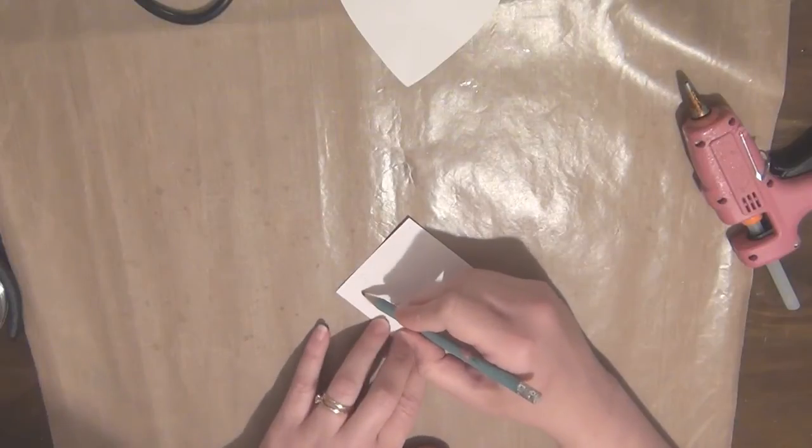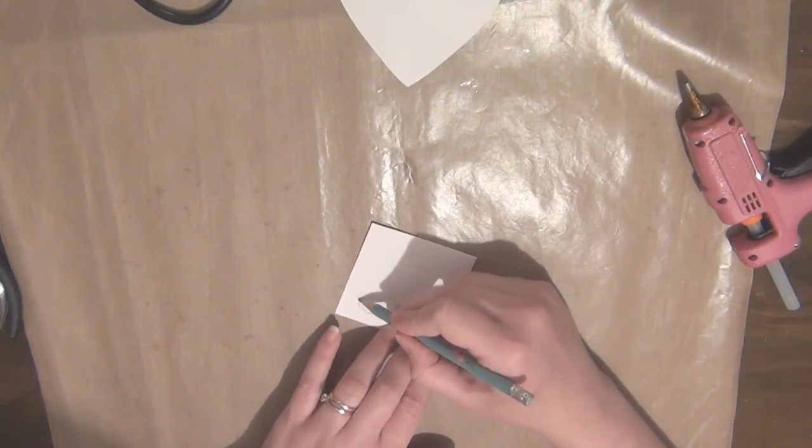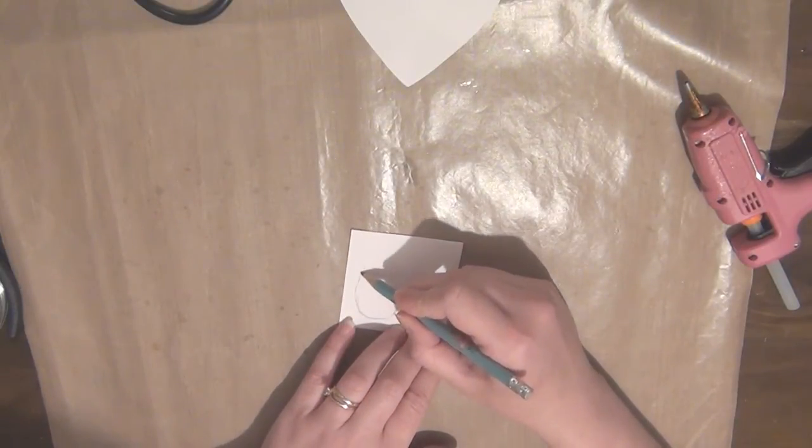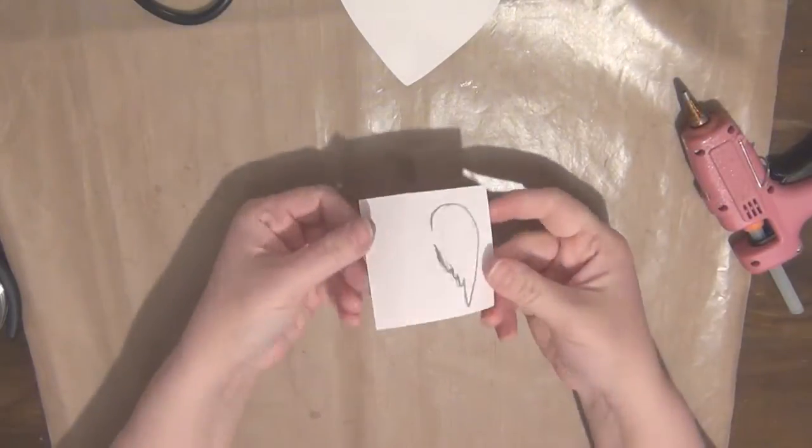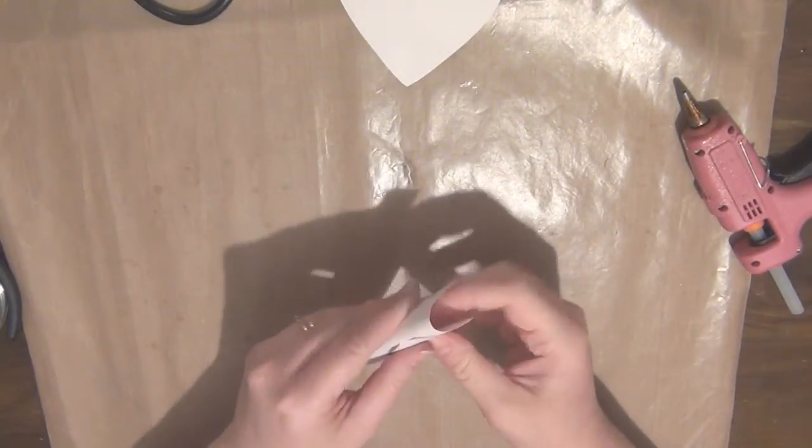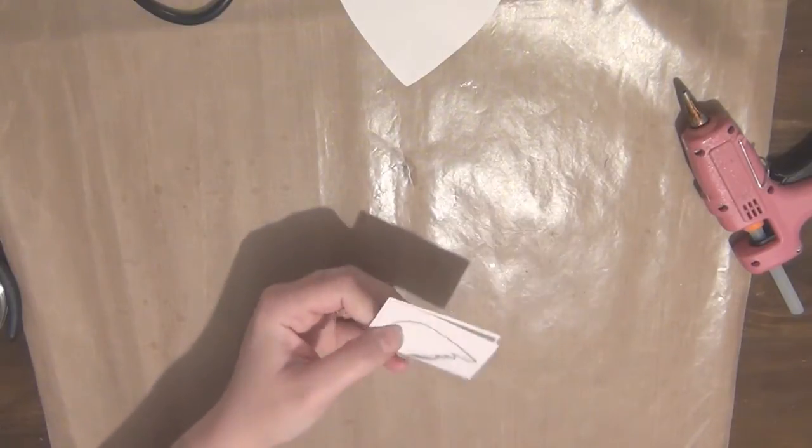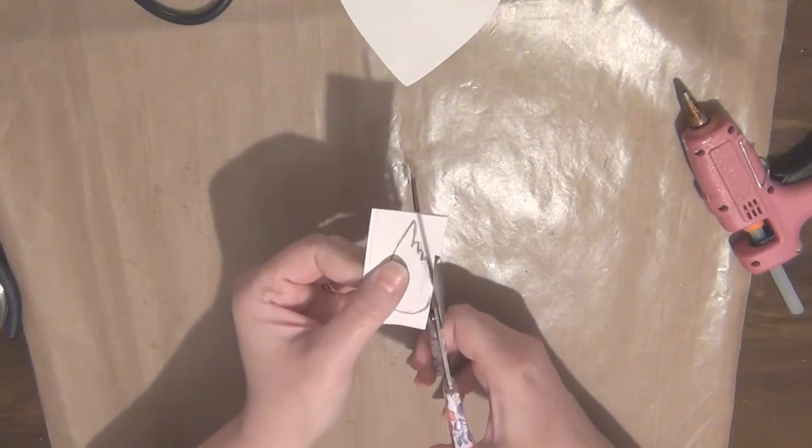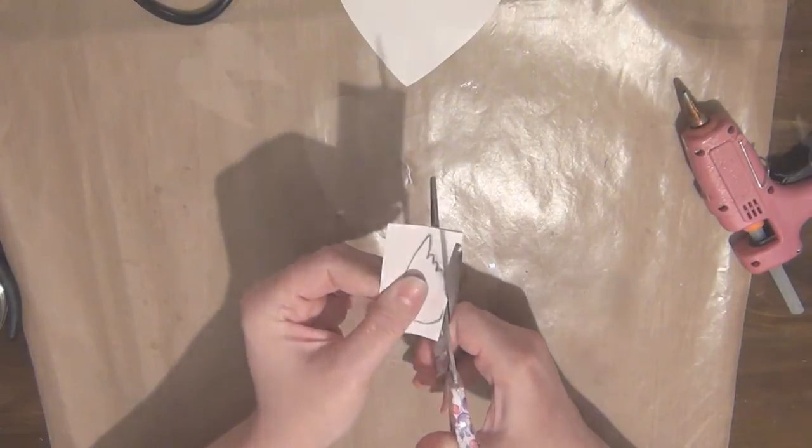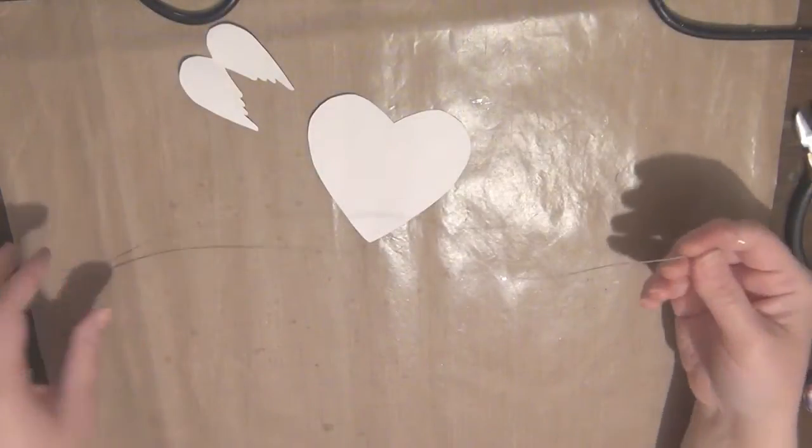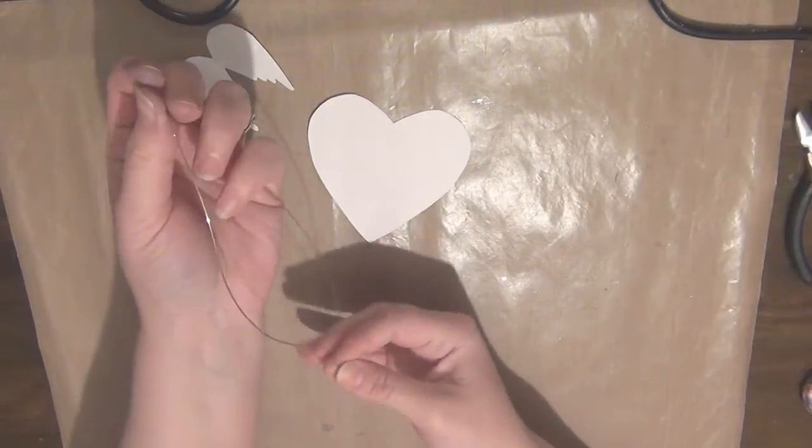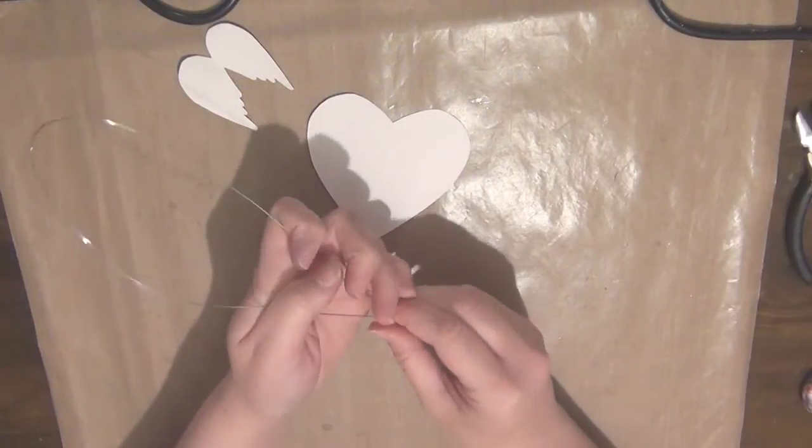I've already sketched out this heart shape and now I'm showing you how I'm sketching out the wing shape. All I'm doing is drawing one side of the wings and then I'll fold my paper in half and cut that out together. I'm making sure that it's still attached in the middle so that way I have something that looks pretty even on both sides.